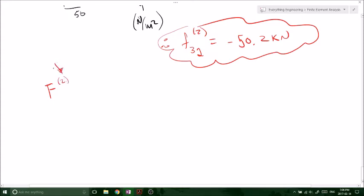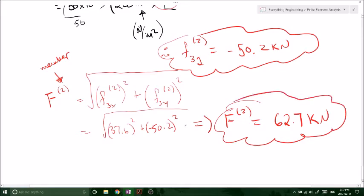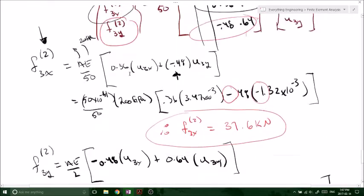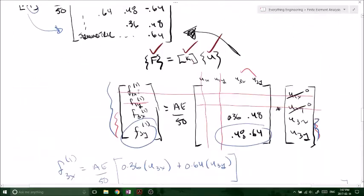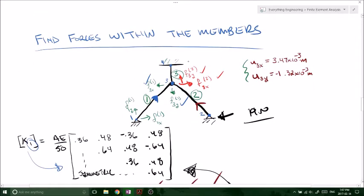Remember this superscript means member 2 is equal to little f. So the force in member 2 is equal to 62.7 kilonewtons. So there we go, that's the force in member 2. Now, one more thing we've got to do. We've got to solve for the force in member 3.